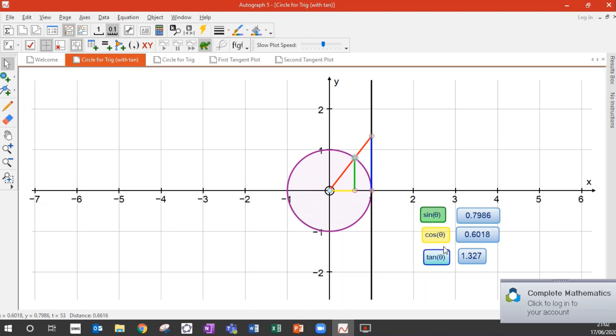So what that means is tan of theta is just opposite over adjacent, which is opposite over 1, which is just opposite. So actually, tan of theta is just this blue length here. This is the opposite length of this new, bigger, right-angled triangle. So tan of theta is this blue length. That's how we can throw tan of theta into the graph. We said sin of theta is the green length. Cos of theta is the yellow length. And now tan of theta is the blue length.